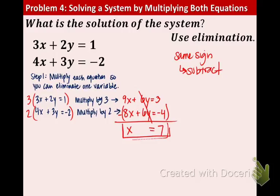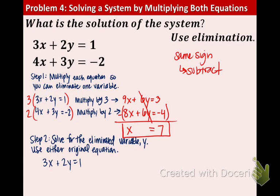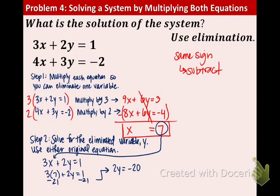Now in order to find the y, we're going to substitute the 7 in for the x in either equation. The first equation looks slightly easier, so let's use that one. So what we're going to do is take the 7 and plug it in for the x in the first equation. So we have 3 times 7 plus 2y equals 1. 3 times 7 is 21. So we're going to take the 21 and subtract it to the other side, opposite operations. That's going to give us 2y equals negative 20. One step divided by 2 and you get y equals negative 10.